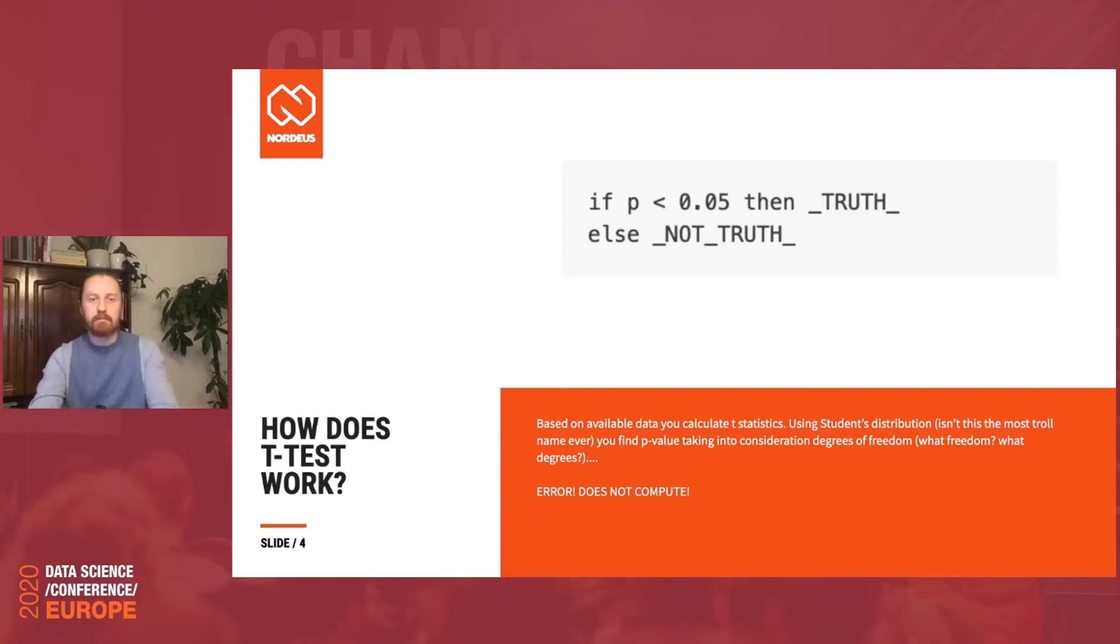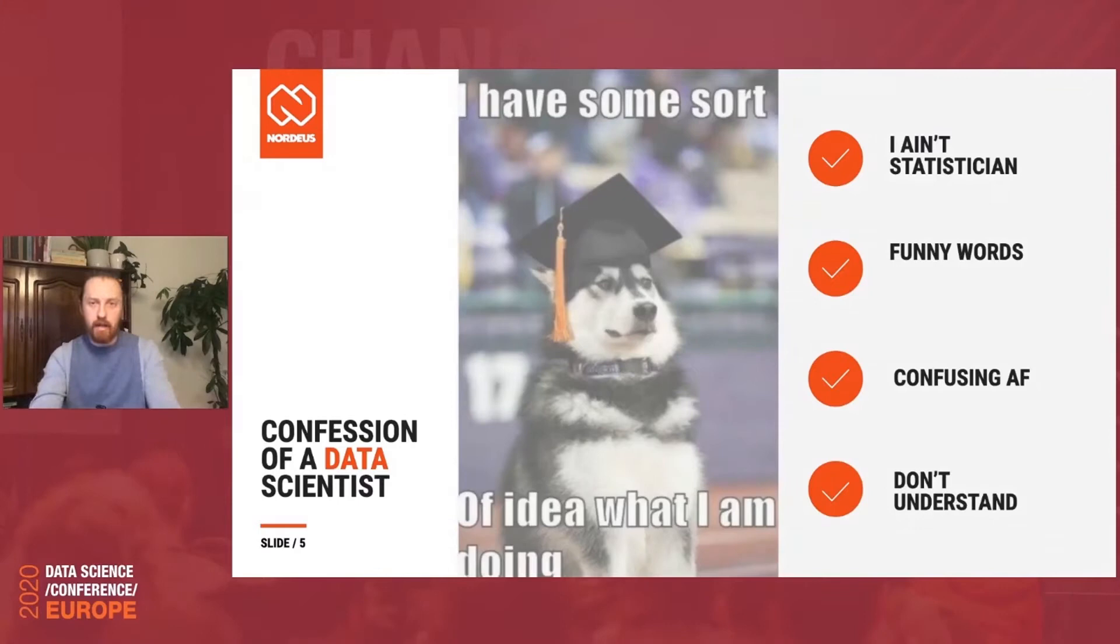To understand why the formulas are the way they are. Instead, I got a recipe, if you like. The list of things you do in order to do the t-test. This is the confession part. I'm not a statistician. I've been trained in statistics. But this feels to me like I'm reading someone else's code. And they didn't have a good idea how to name the variables. The names aren't descriptive or intuitive, at least not to me. It feels very confusing. And frankly, for the most part of my career, I followed the recipe.